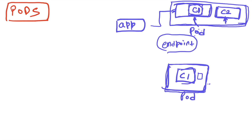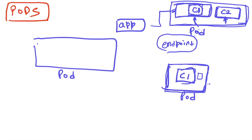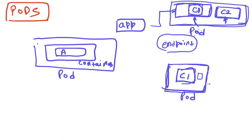In most common scenarios you'll have one pod with one container running your application, but a pod can also be a group of containers. At a high level: you have a pod, inside the pod you have a container, and inside the container your app runs. This is how pods work in Kubernetes — a pod can be a single container or a group of containers.